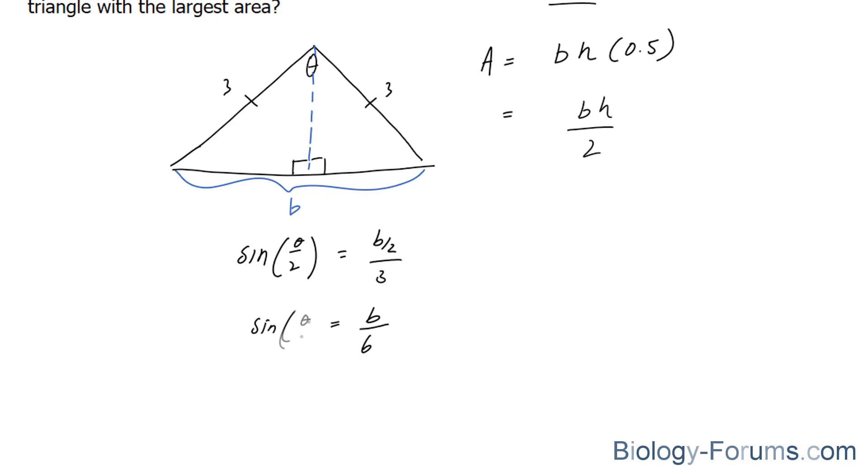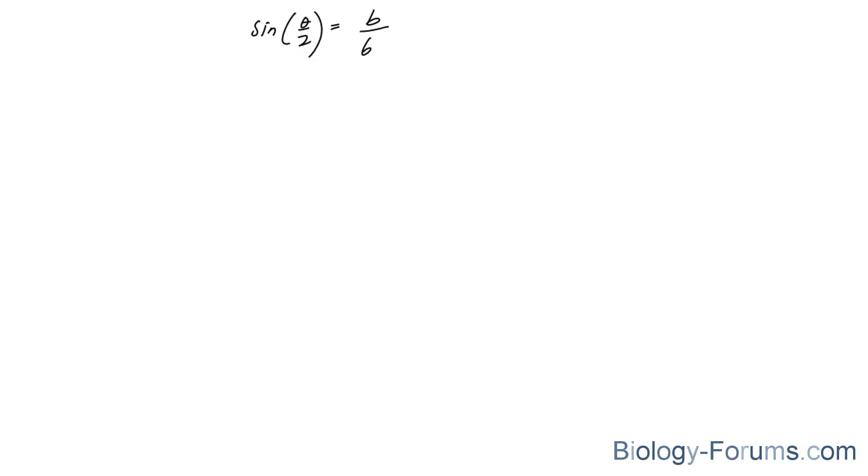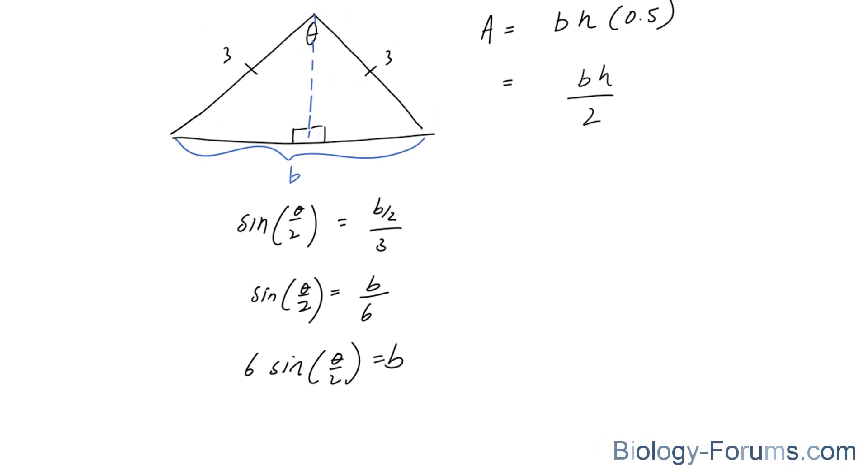On the right side, we have sine theta over two. We're going to solve for b by multiplying both sides by six. And we end up with the following. So that is our b value.